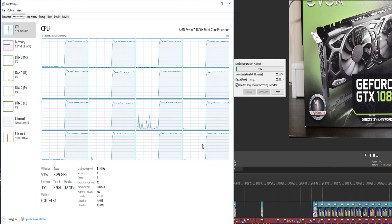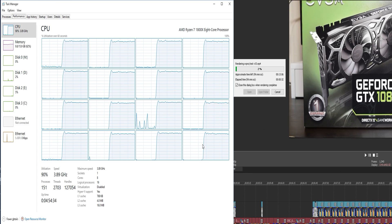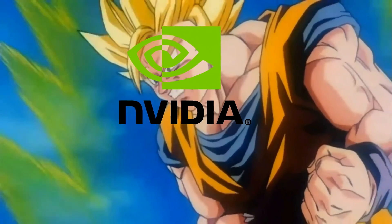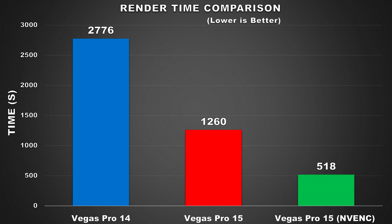So I was quite happy to see these results. But wait, it gets even better — and this is to go even further beyond! This is the result I got when I used Nvidia's NVENC as the encoder. They've clearly got it working now, and not only that, but it has cut down rendering times tremendously. With the exact same settings, the video was rendered out in 518 seconds or 8 minutes and 38 seconds. That's 742 seconds faster than the previous result, and 2,258 seconds faster than the result I got from Vegas Pro 14 — a massive, massive improvement.